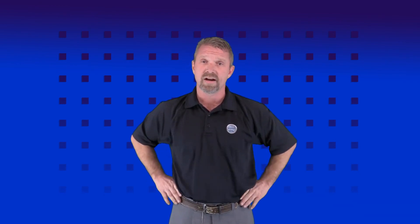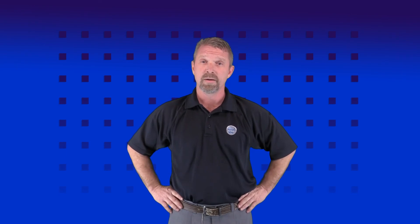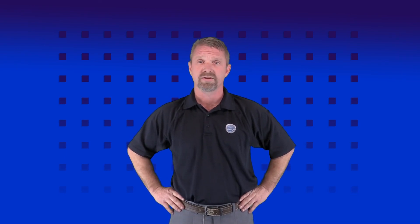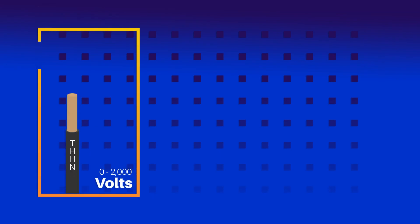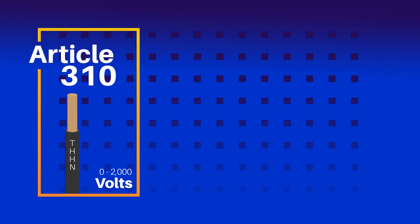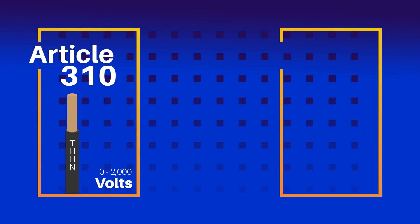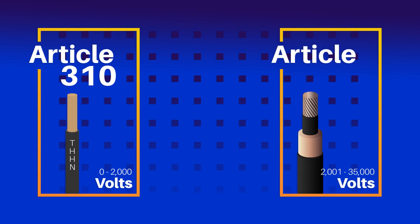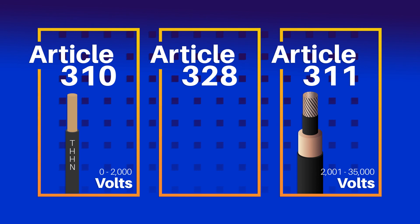As a result of this, not only have the requirements of MV cables and conductors been consolidated to one centralized location, but it also aided in the reorganization of Article 310. Now all the requirements for cables up to 2000 volts are found in Article 310, and those for voltages of 2001 through 35,000 volts are found in Article 311. The entire Article 328 was removed.